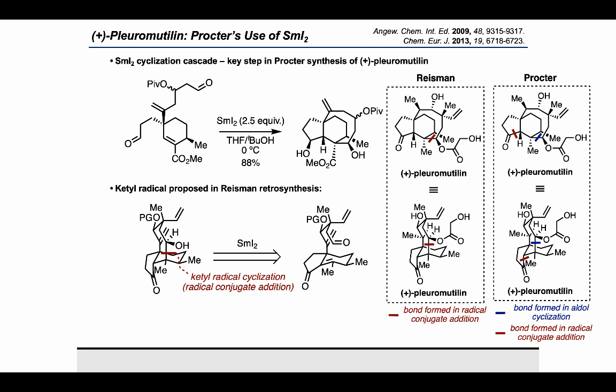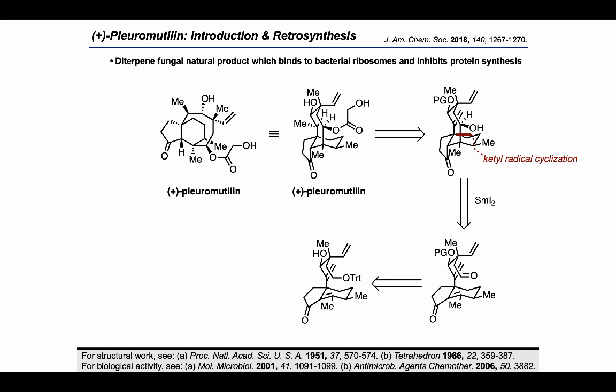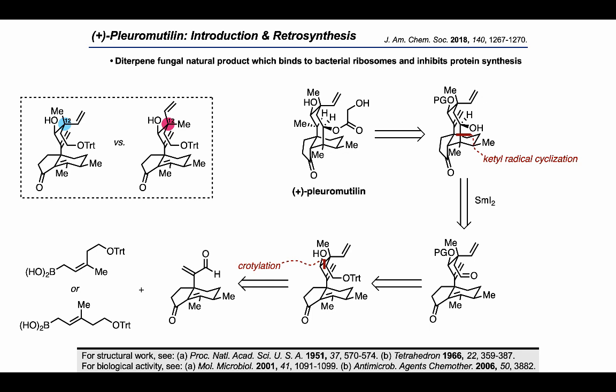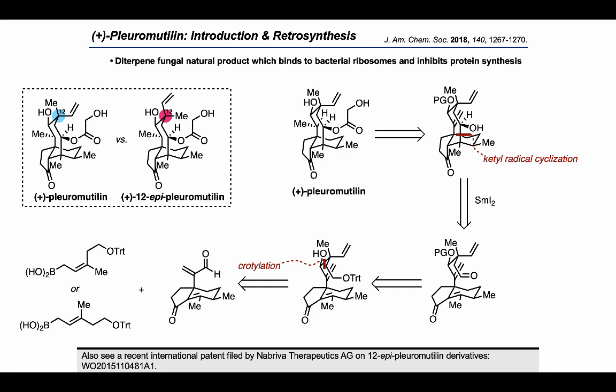Returning to the retrosynthetic analysis of Reisman, they thought that if they could simplify their cyclization substrate even further, they might be able to use a crotylation to install the requisite appendage. This crotylation could proceed from either a Z or E crotylboronic acid starting material, which is a choice that has the potential to allow access to products that are diastereomeric at C12. The larger significance of this is that the C12 epimer of plurimutalin is also a desirable target and has recently received the attention of the pharmaceutical industry in the form of a patent.